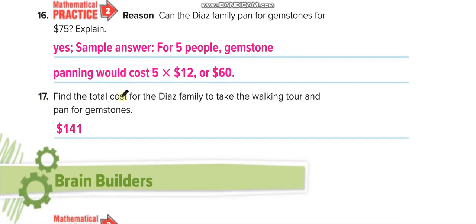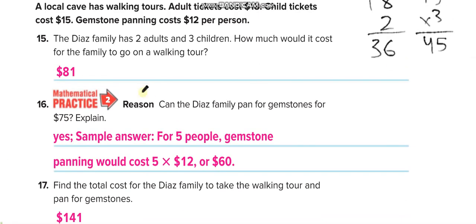Find the total cost of the Diaz family to take the walking tour and pan for gemstones. You have to add this 60 and 81, so total is 141.